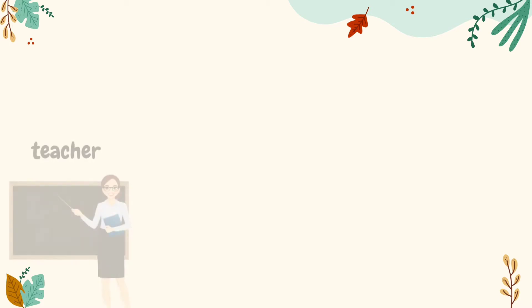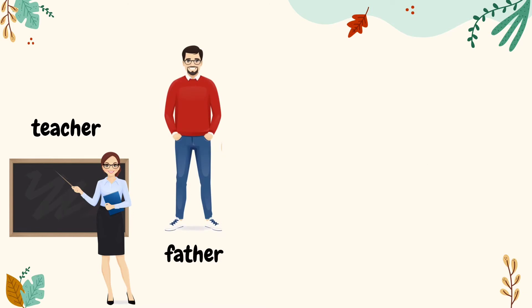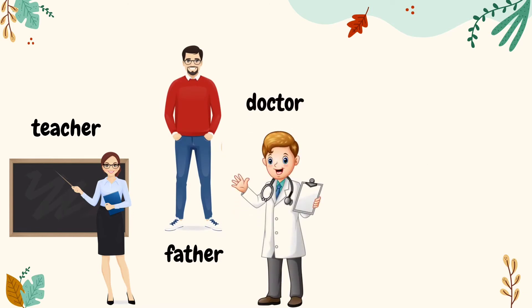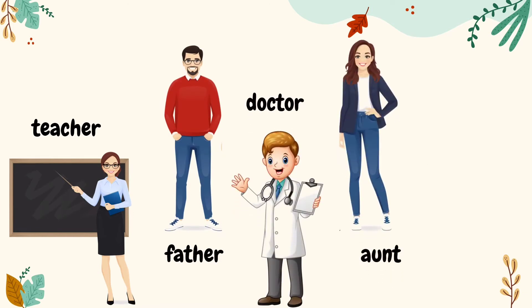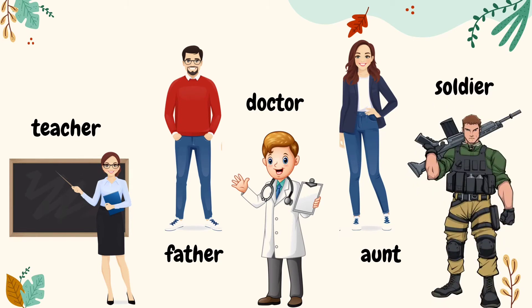There are many people around us whom we identify with certain names. Teacher, father, doctor, aunt, soldier are the names of people. So, a noun can be a name given to a person.